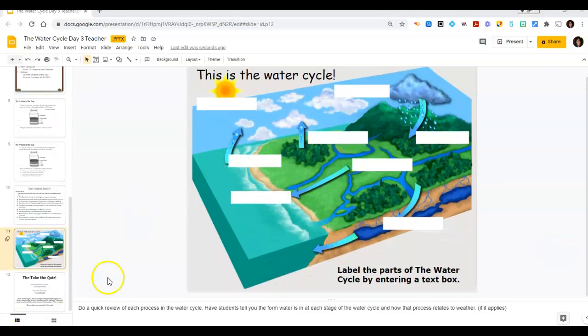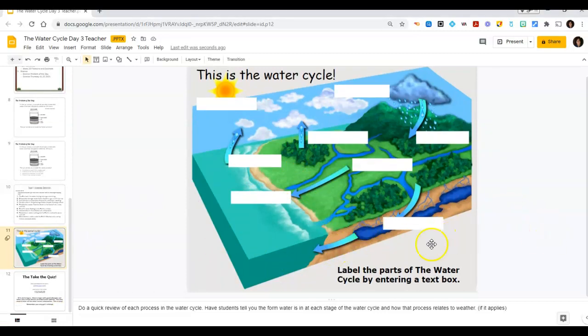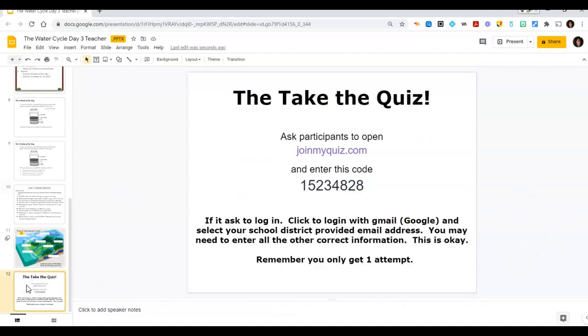When you're done with that, you're going to submit it. Submit because it's going to be graded today. And then, because I'm looking at your problem of the day and then I'm looking at that labeling the diagram for the water cycle, then I want you to go do this: join my quiz. Thumbs up. Label the diagram, submit, submit, join the quiz.